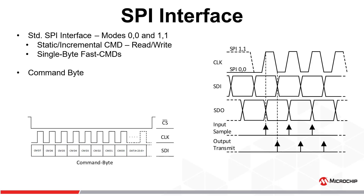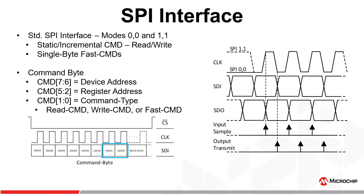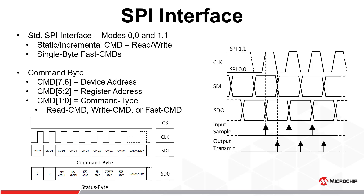The command byte, which determines what operation is to be performed, is comprised of three identifiers: the device address bits, identifying which device on the bus is being targeted; the register address bits, identifying which register in the register map the operation is to be performed on; and the command type bits, identifying whether the operation is a read, write, or fast command operation. It should be noted that for every command byte transmitted over SDI, the device status byte will be simultaneously transmitted on SDO.